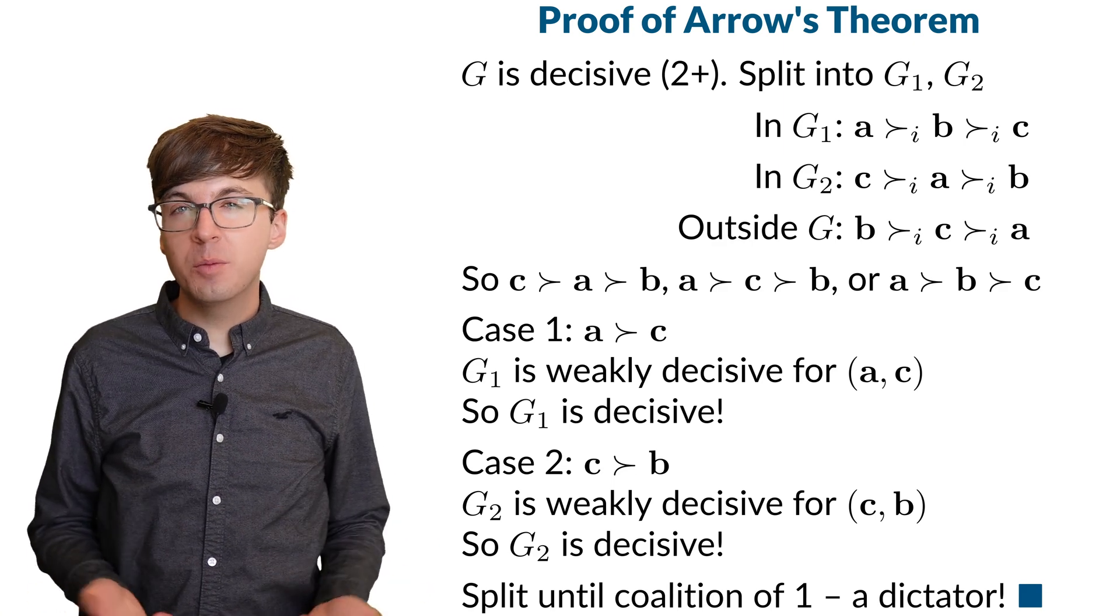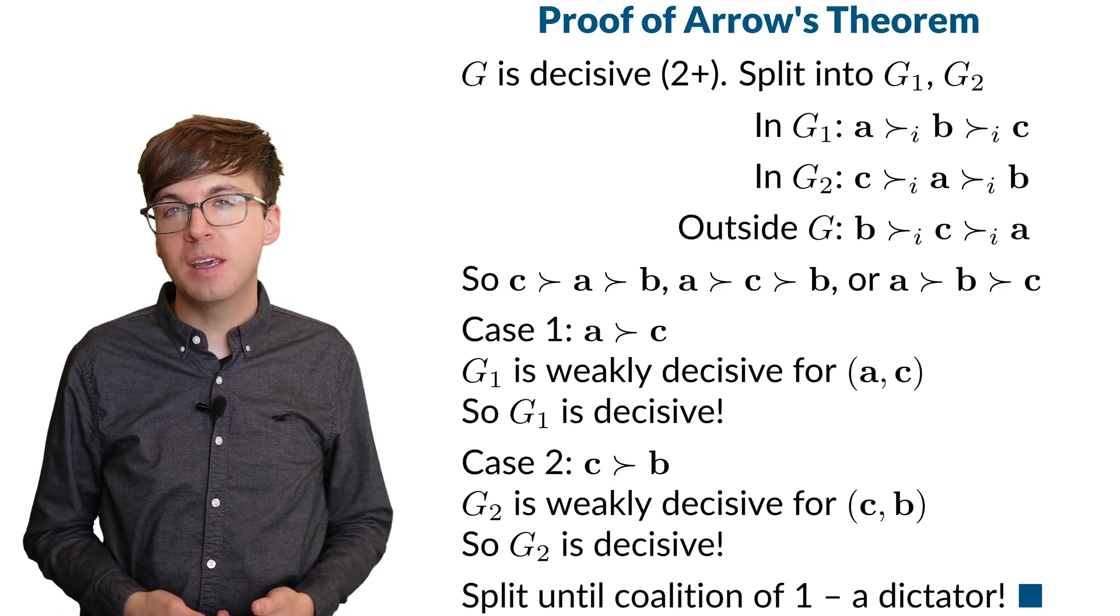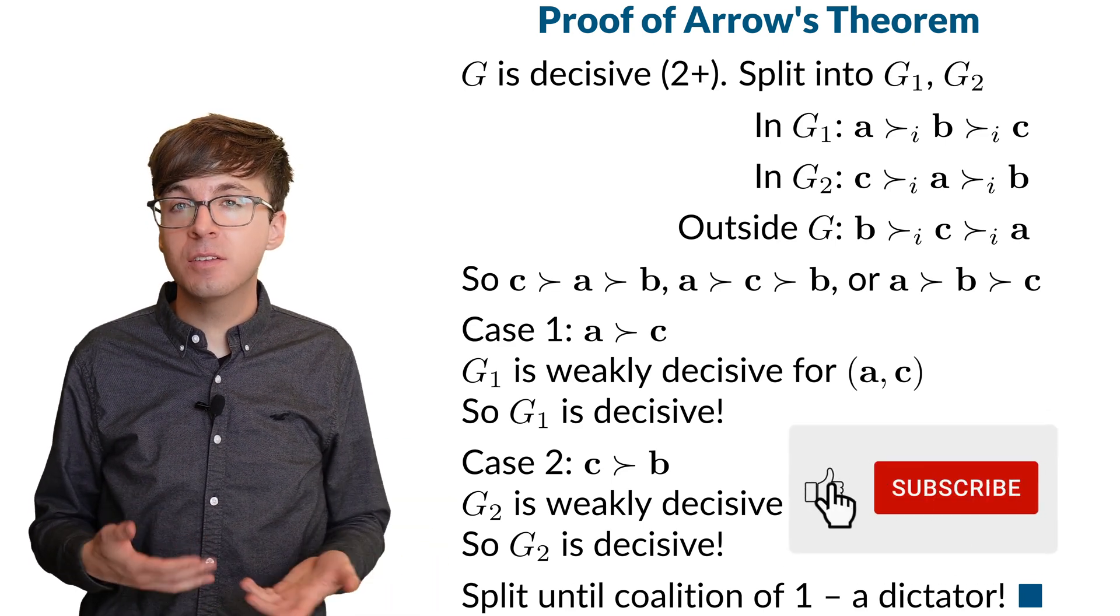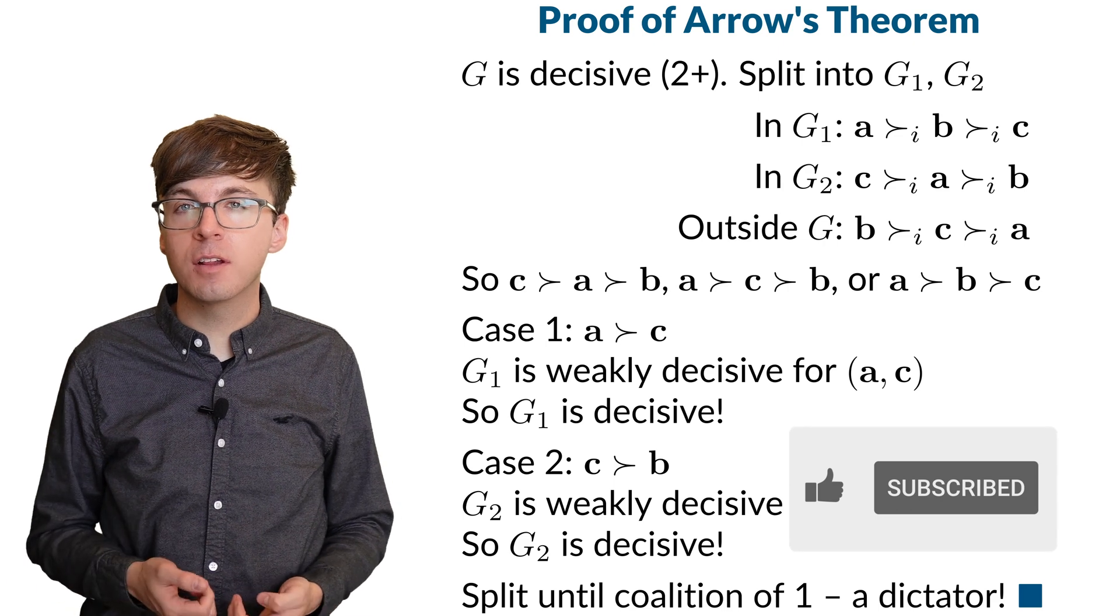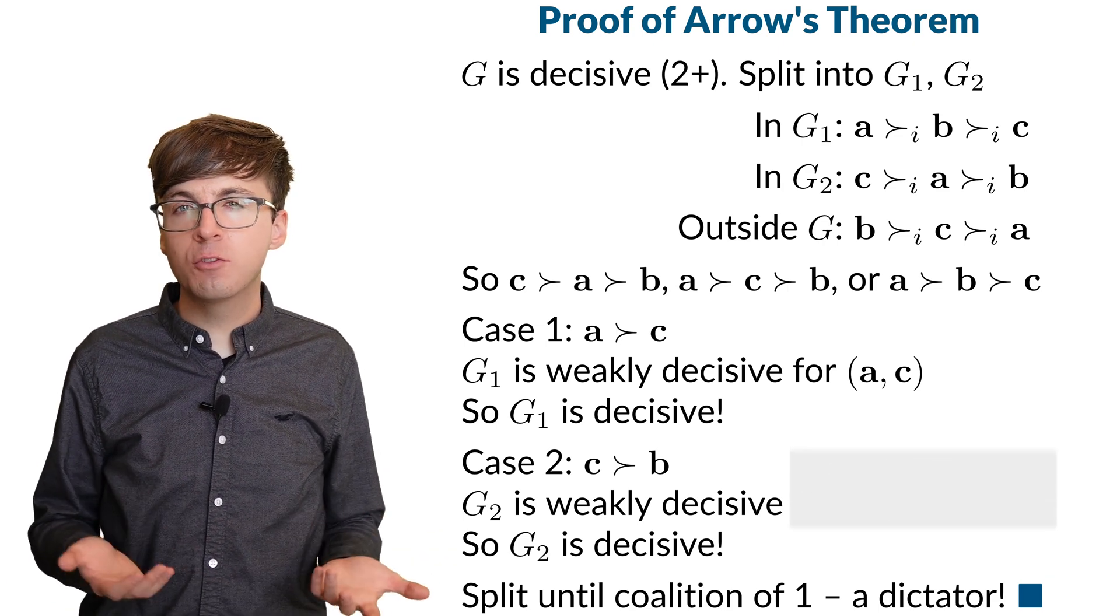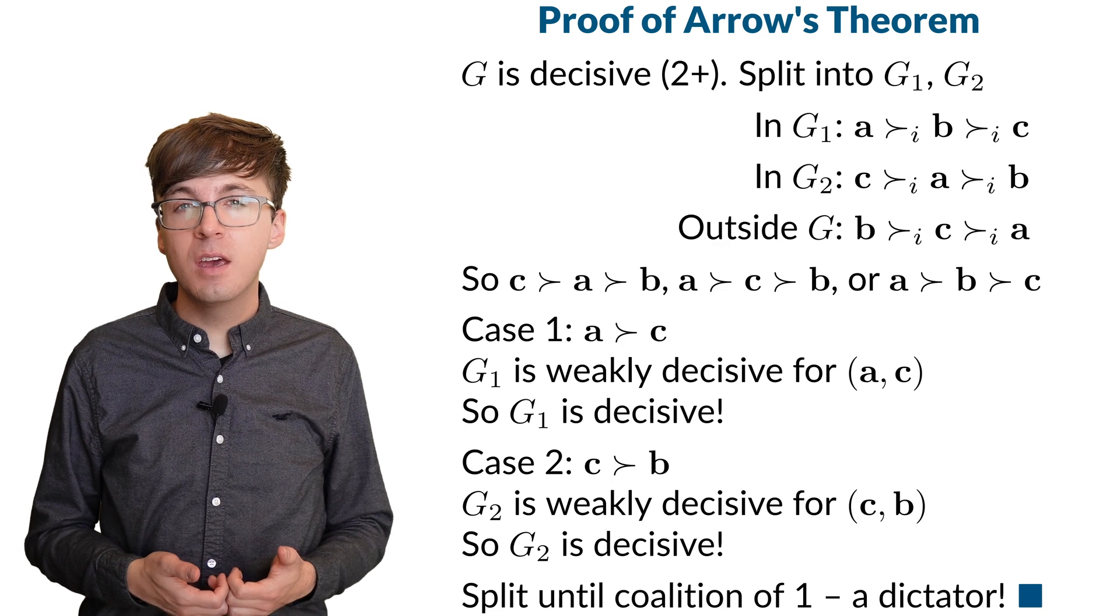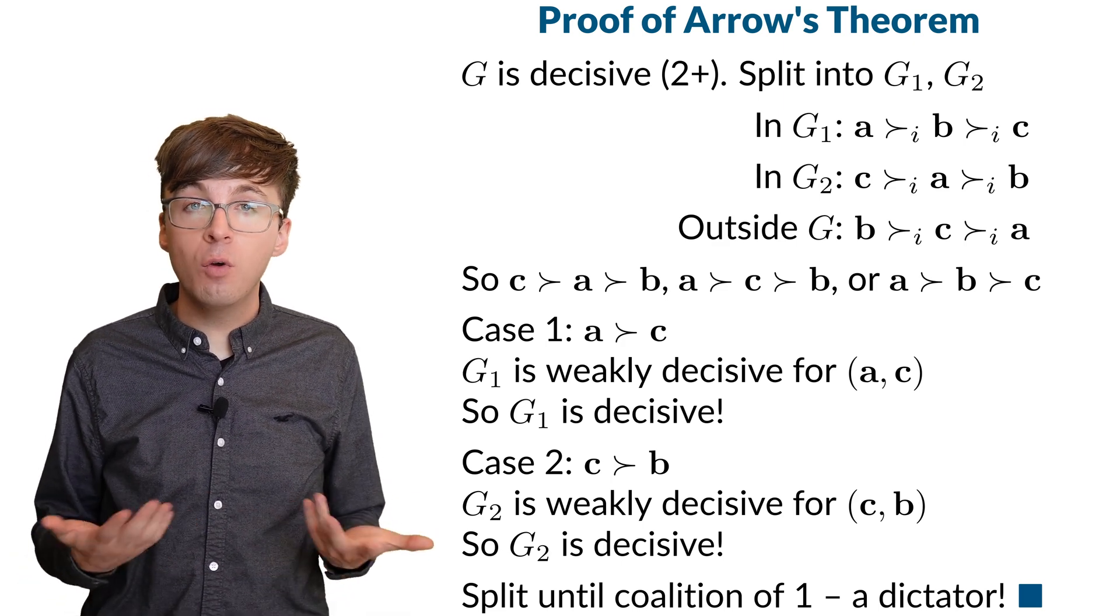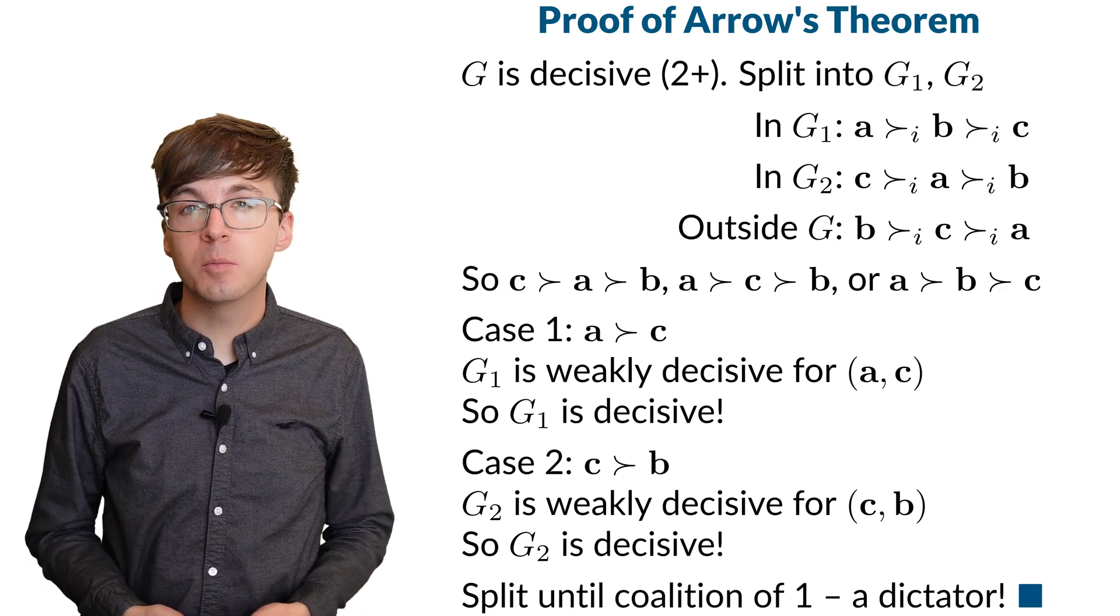Arrow's Theorem has profound implications for any decision-making process involving rankings, from economics and politics to algorithms and artificial intelligence. Methods like ranked choice voting attempt to mitigate these limitations, but all of these methods are still subject to Arrow's Theorem, and no ranked voting system can escape these limitations.